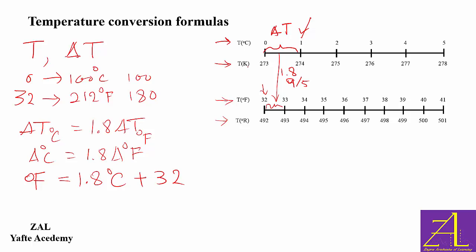Kelvin and Celsius have the relationship as degrees K is always equal to 273 plus the degrees C.